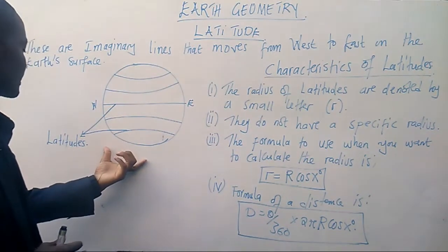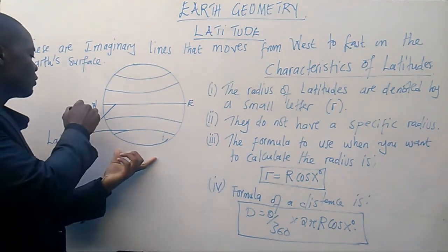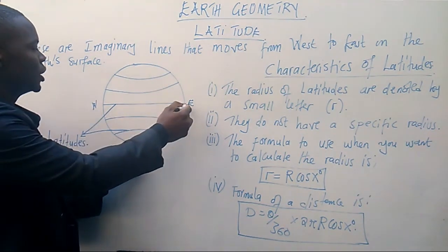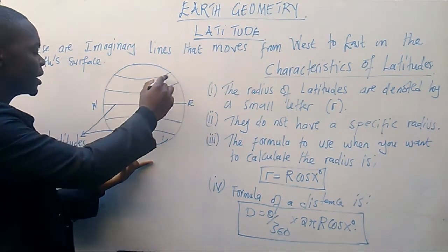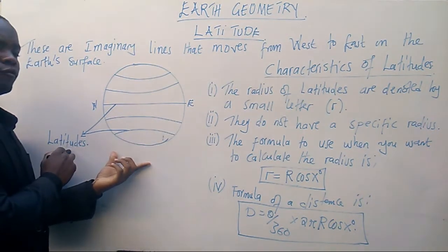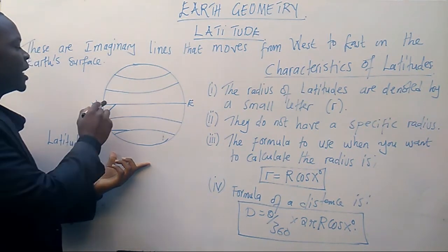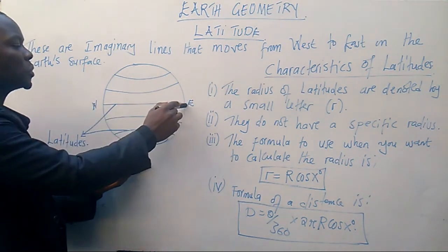This is an example of the earth surface. As you can see, we have got the direction of west and east. These lines which are moving in this direction are what we are calling latitudes. Very simple concept there. An example of latitude is the equator.